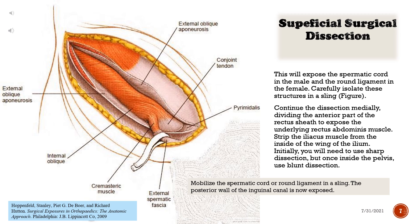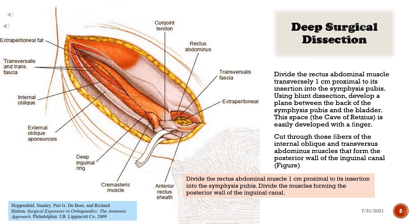Continue the dissection medially, dividing the anterior part of the rectus sheath to expose the underlying rectus abdominus muscle. Strip the iliacus muscle from the inside of the wing of the ilium — initially use sharp dissection, but once inside the pelvis use blunt dissection. Mobilize the spermatic cord or round ligament in a sling. The posterior wall of the inguinal canal is now exposed.